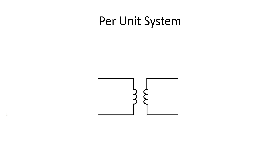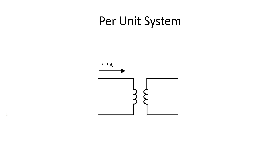What about currents? If we feed the rated current to the primary — 4 amps — we get the rated current of the secondary, 400 amps. That is, we feed 100% of the current in the primary and we get 100% in the secondary, or in per unit, we feed one per unit and get one per unit. Feeding 80% of the rated current, that is 0.8 in per unit, and then 50% — it holds.